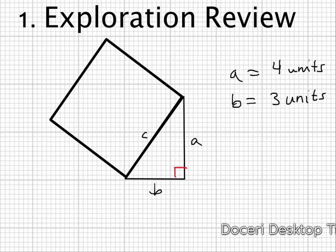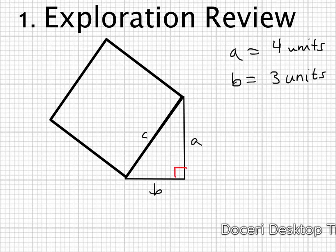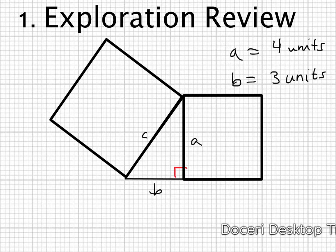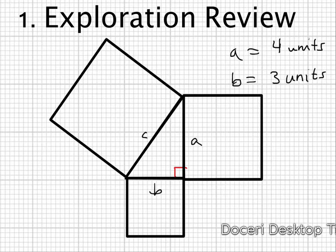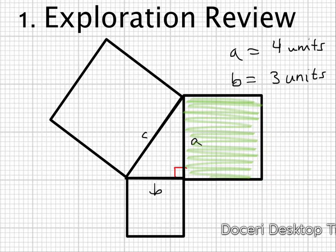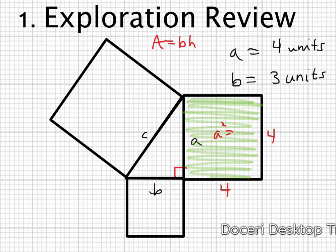Next, what they had you do was build a square off of both A and B. So we make a square off of A and B. Here's your A square and here's your B square. Then you were supposed to find the area of each. Since A is a square with side lengths of four units, the area of a square is base times height. Since this is a square, your base and your height are the same, so A squared is going to be 16.